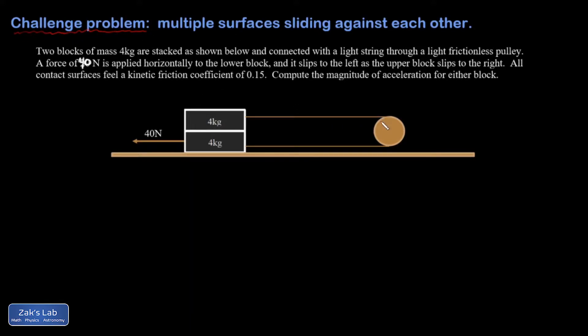In this problem I have a fixed pulley and these two blocks are attached by a string and I'm pulling on the bottom block with 40 newtons of force. I fixed that as a typo up here in the intro and that causes the bottom block to slide to the left and the top block simultaneously is sliding to the right. So I have multiple sliding surfaces all of them experiencing a kinetic friction coefficient which I'll just keep out here of 0.15.